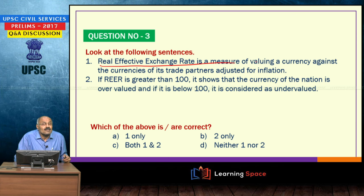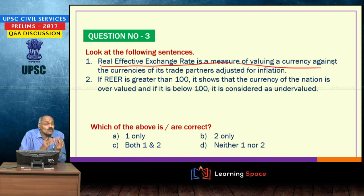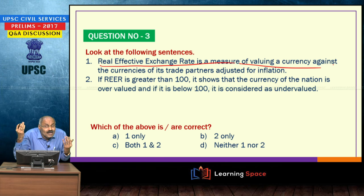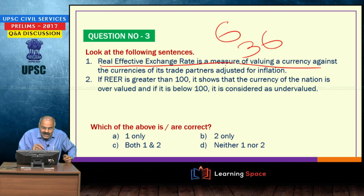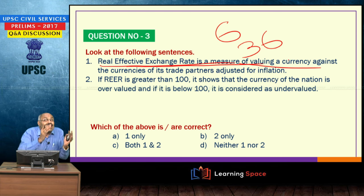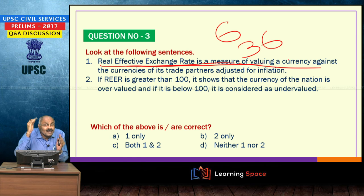Real effective exchange rate, REER, is a measure of the currency valued against the currencies of its trade partners, adjusted for inflation. For India, it is calculated for 6 trade partners as well as 36 trade partners.